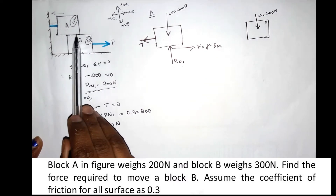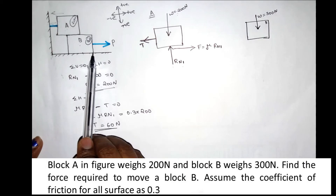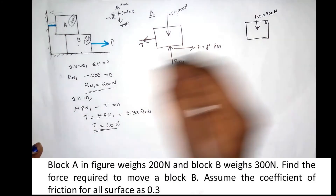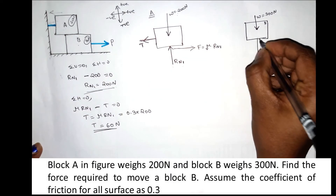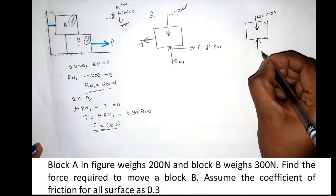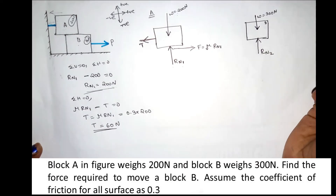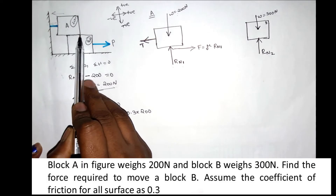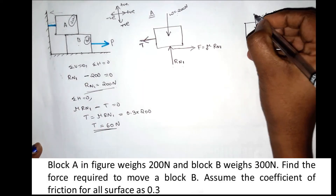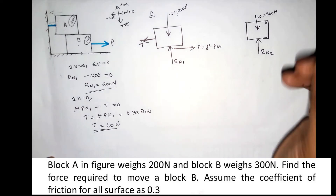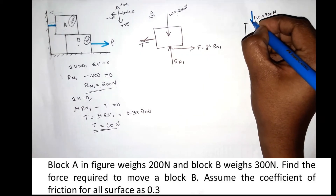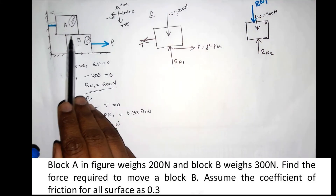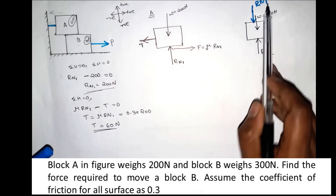For Block B, we identify the contact surface. The reaction at the contact surface is perpendicular to the surface and is written as Rn2. Note that the reaction from Block A on Block B is also present — Rn1 acts downward on Block B. If you consider a weight of 300N, that is also included.